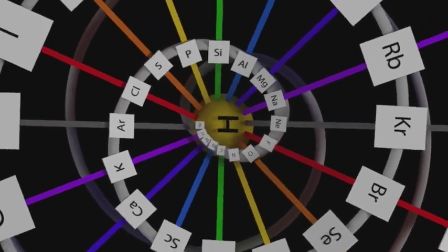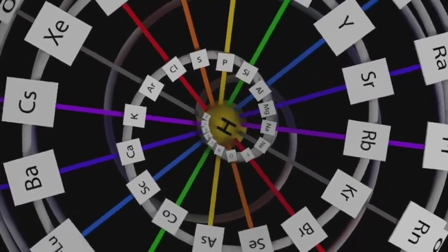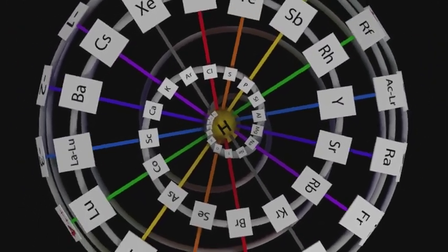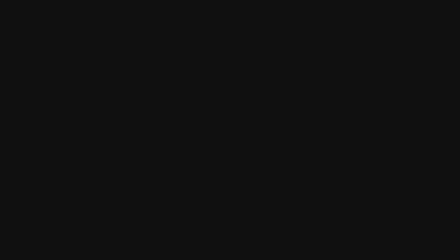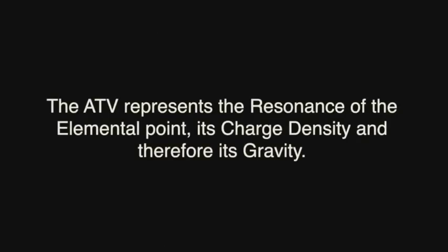The model of the elements describes the parable of family relationships that exist between zero matter, light, matter, sound, crystal form, positive and negative charge, paramagnetic disposition and form. The ATV represents the resonance of the elemental point, its charge density and therefore its gravity.